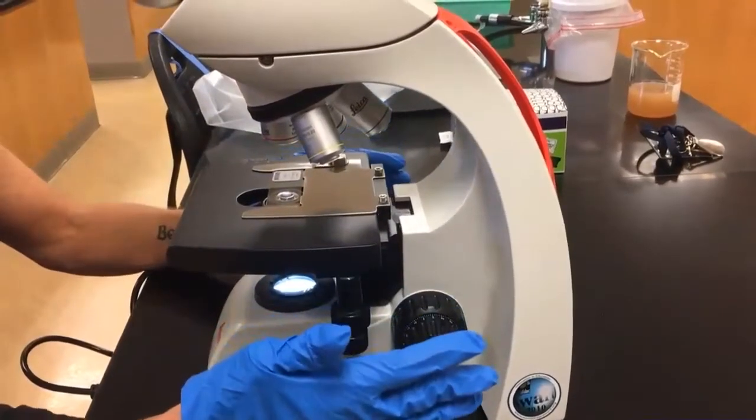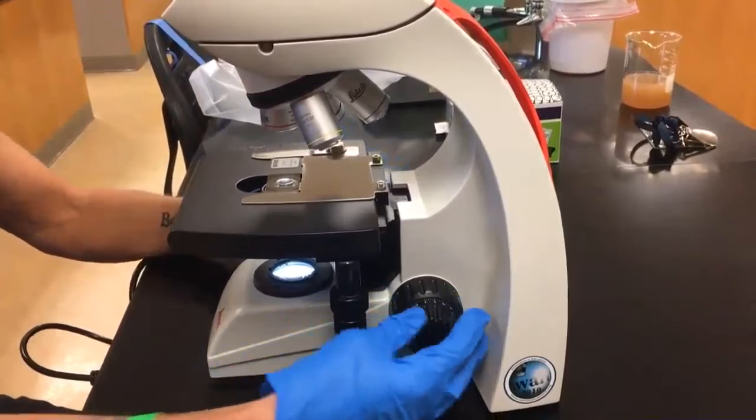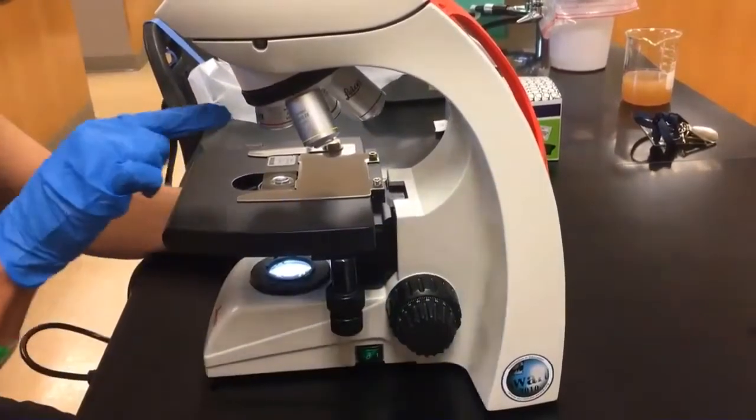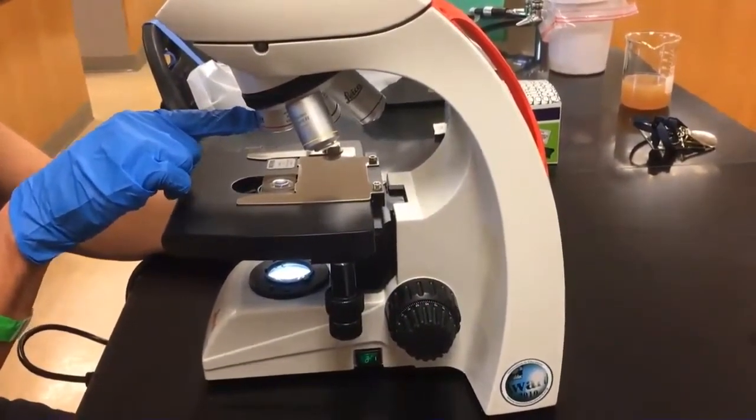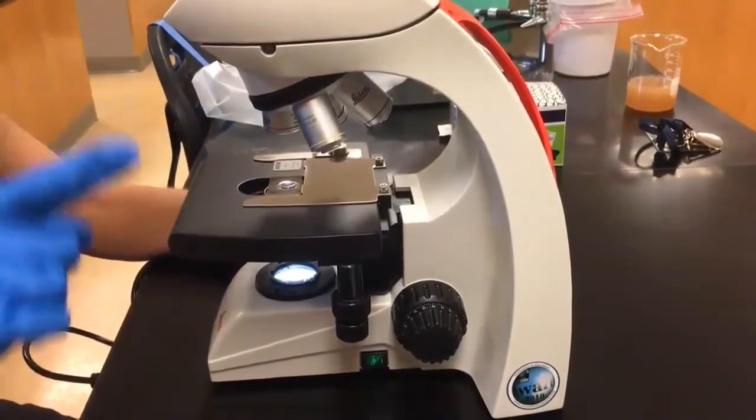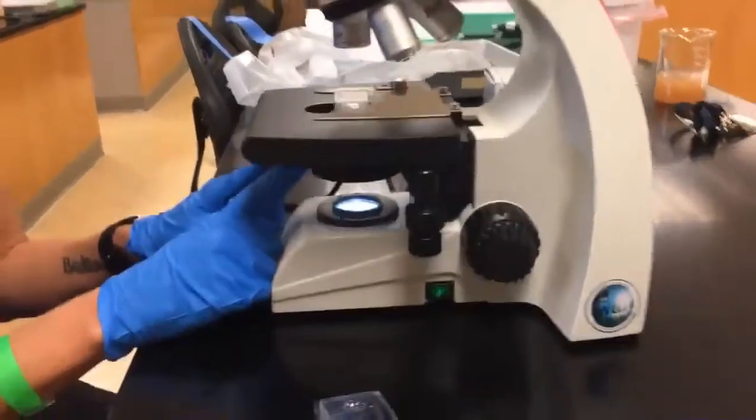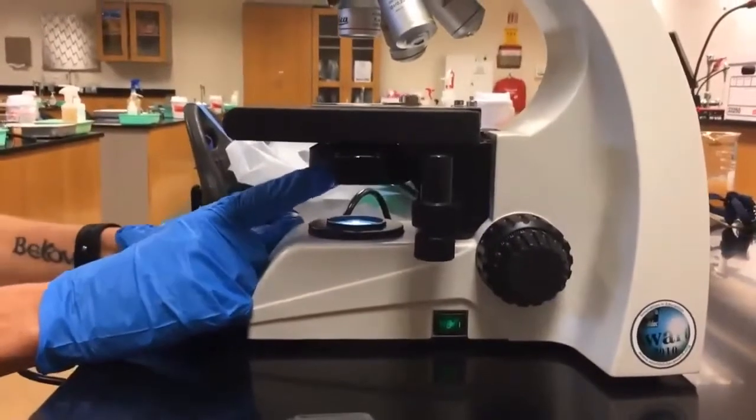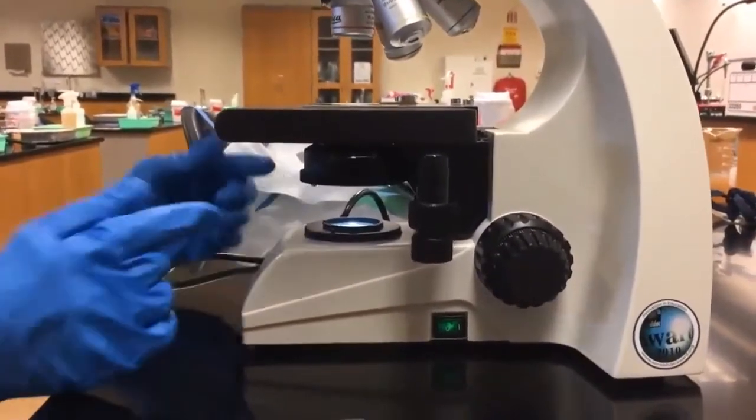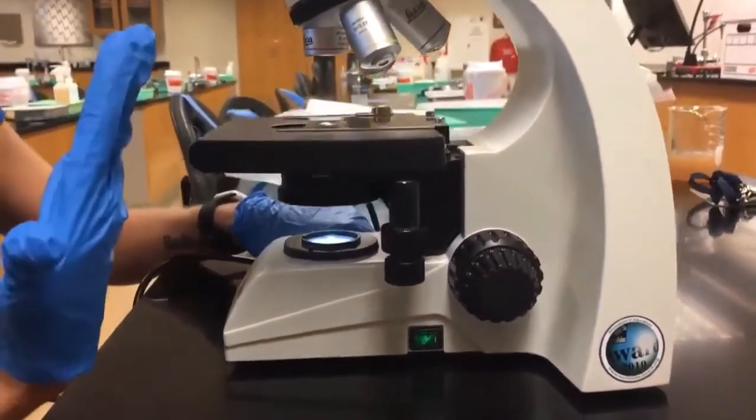The best way to start viewing a specimen is to start with your scanning lens, the shortest one with the red rim. You want to go down here and adjust your iris diaphragm to where it says 4X. That's going to give you the right amount of light through your specimen.